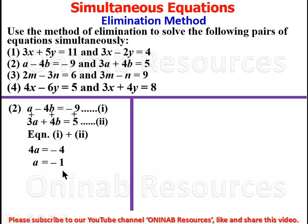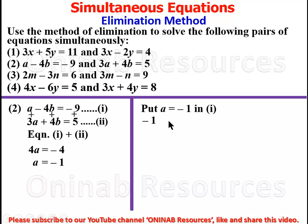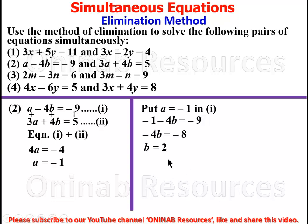We substitute a equal to negative 1 in equation 1. So we have negative 1 minus 4b equal to negative 9. We isolate negative 4b: moving negative 1 to the other side gives negative 9 plus 1 which is negative 8. Dividing both sides by negative 4, we have b equal to 2.